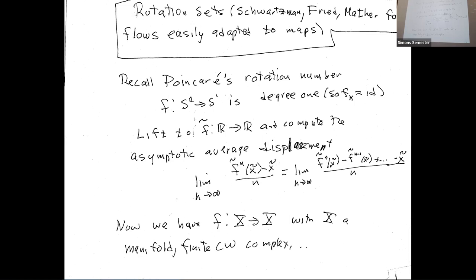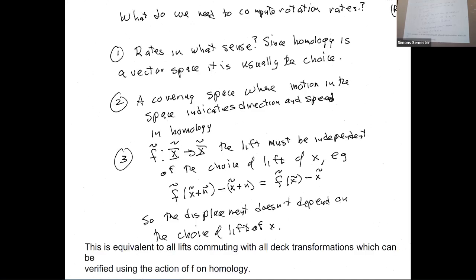We can do this for any manifold or finite CW complex, but think of X as a higher-genus surface, annulus, or punctured disk. To compute a rotation set, you need to choose where you're measuring things — in homology, since we're doing averaging and want a vector space. So we need a covering space that tells us about homology: the universal abelian cover. We want displacement in the cover that measures homology. Also, all lifts must commute with all deck transformations for things to be well-defined.